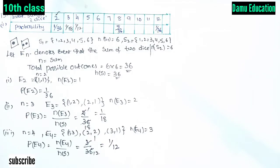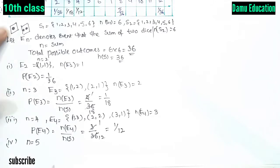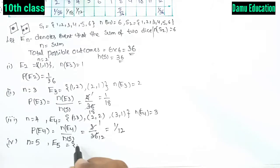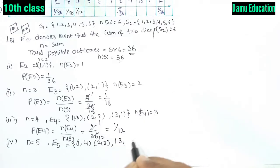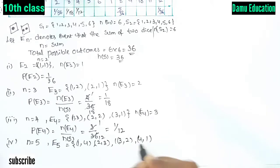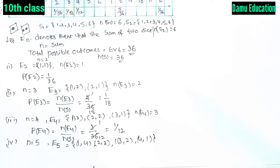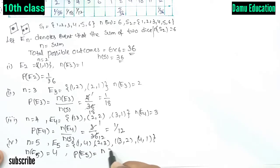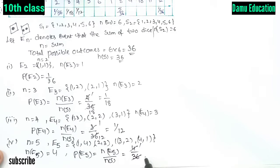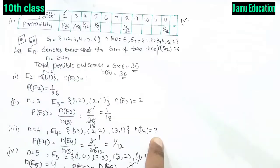For E5, the sum equals 5. The favorable outcomes are (1,4), (2,3), (3,2), and (4,1). So n(E5) = 4, and P(E5) = 4/36 = 1/9.